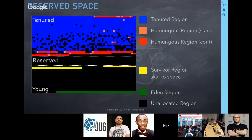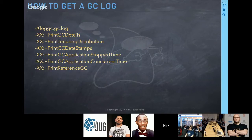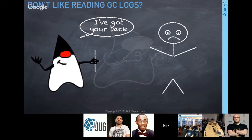To see what the collectors are doing, you need a GC log. Prior to Java 9, specific settings are used to enable GC logging. GC logs are neither human nor machine readable, so tooling helps — Kirk uses Censum to analyze them.